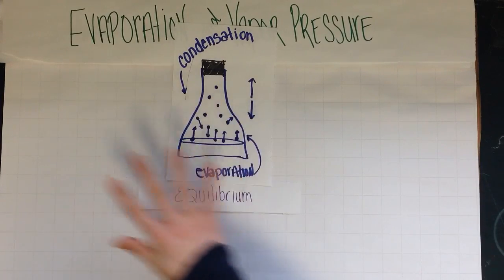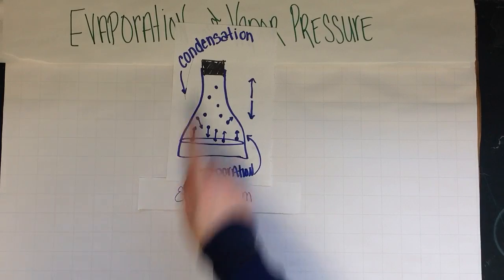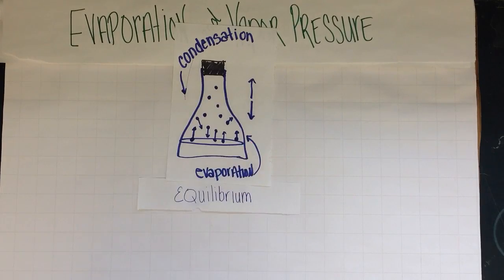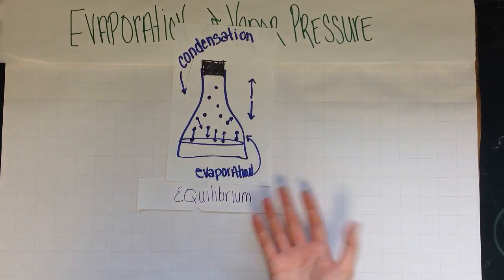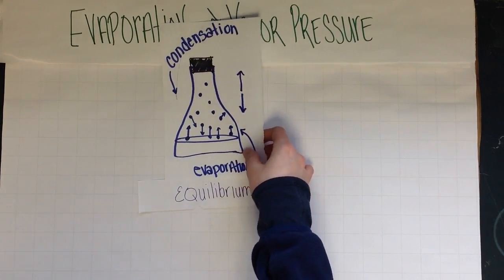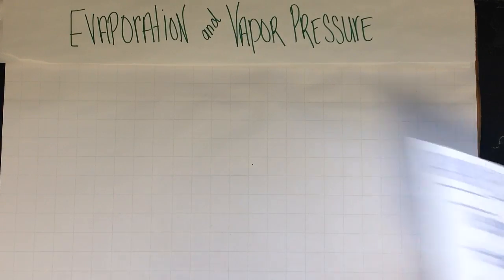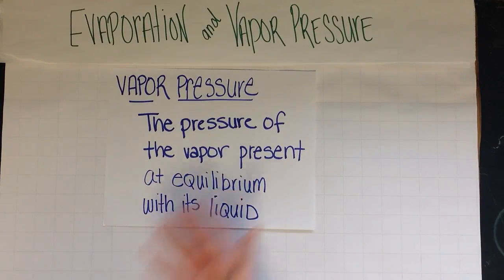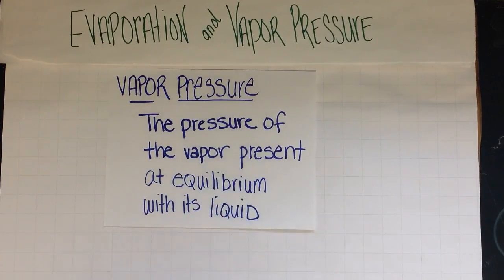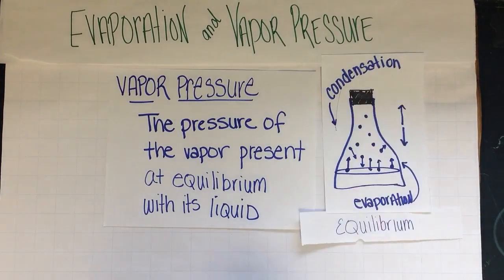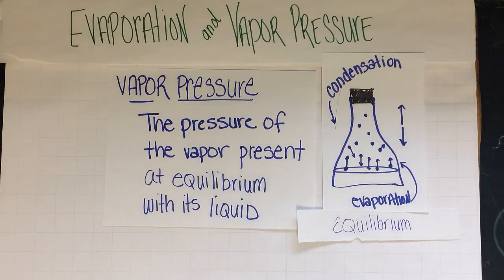Vapor pressure is the pressure exerted by the gas molecules that are forming. I can even have a vapor pressure if I remove the top of this container — it's just going to be hard to measure it. I could say that I have a vapor pressure, but it's escaping into the system. Here's a formal definition: vapor pressure is the pressure of the vapor present at equilibrium with its liquid. This is a great way to measure it because you've capped off the system. But vapor pressure can occur even if you don't have a lid on that system.